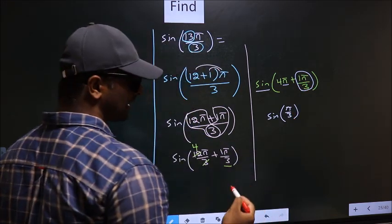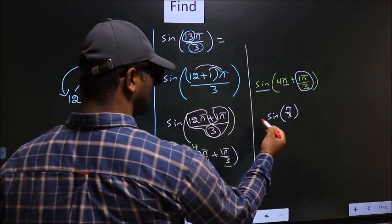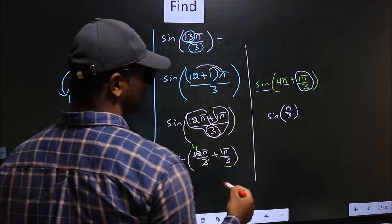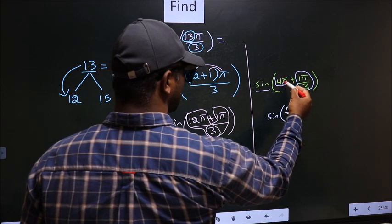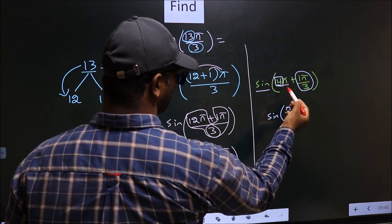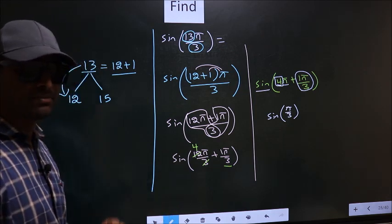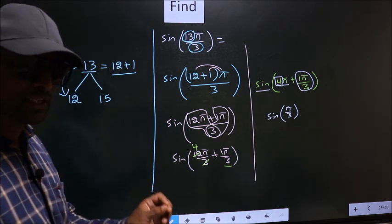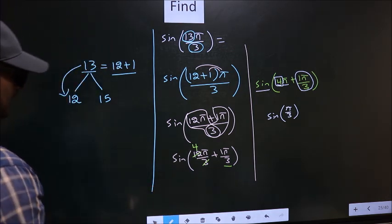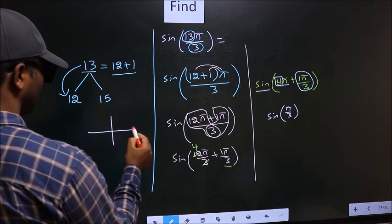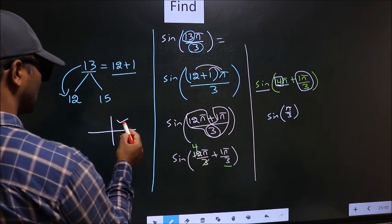Now the question arises, will we get here plus or minus? To answer that, you look at this number 4, which is even. For every even multiple of π, the angle will lie either in first quadrant or in fourth quadrant.